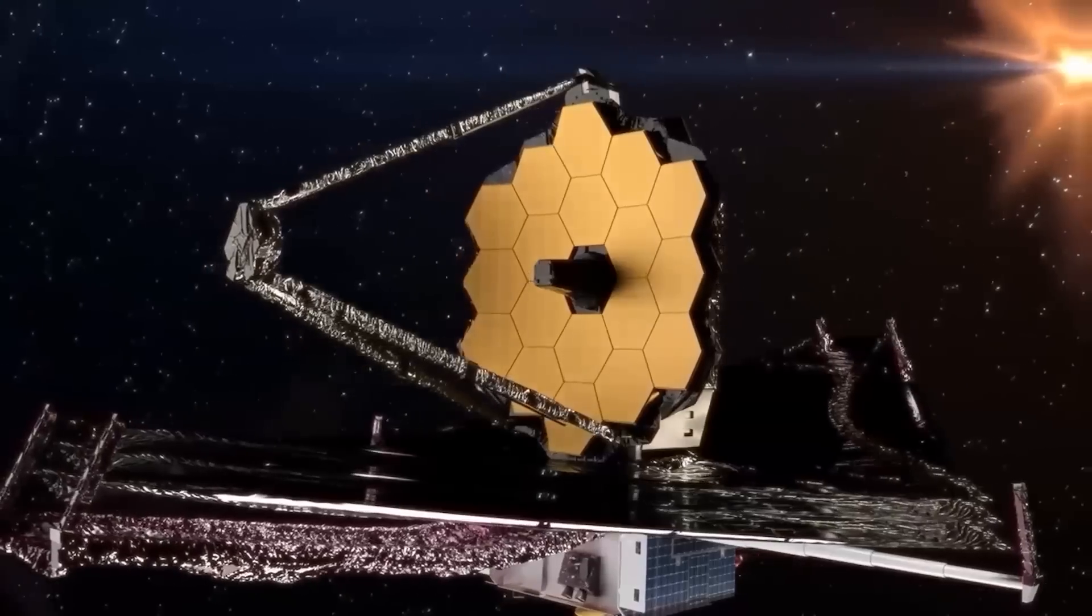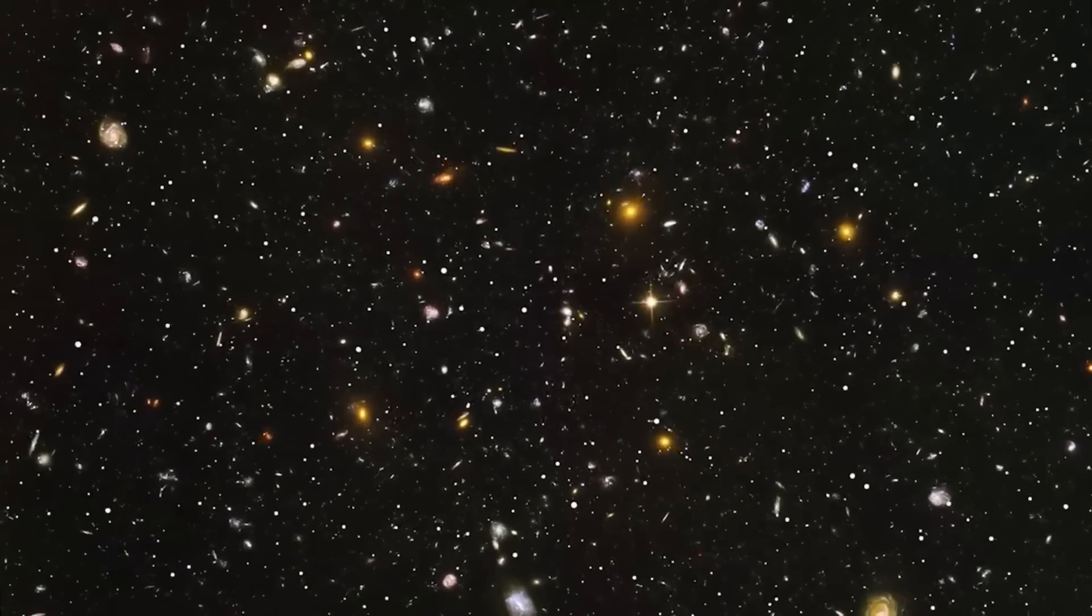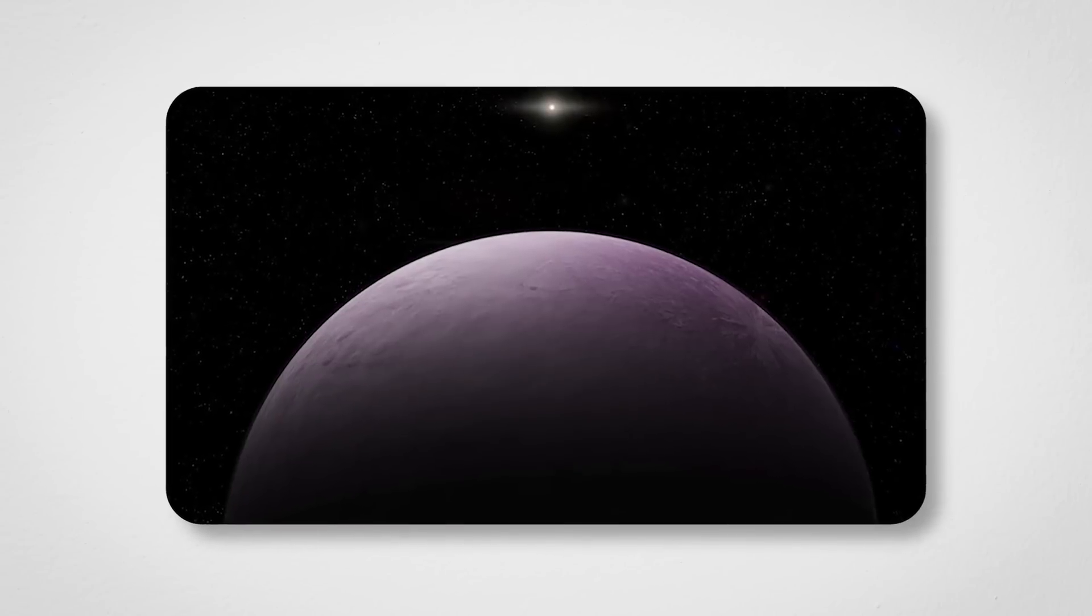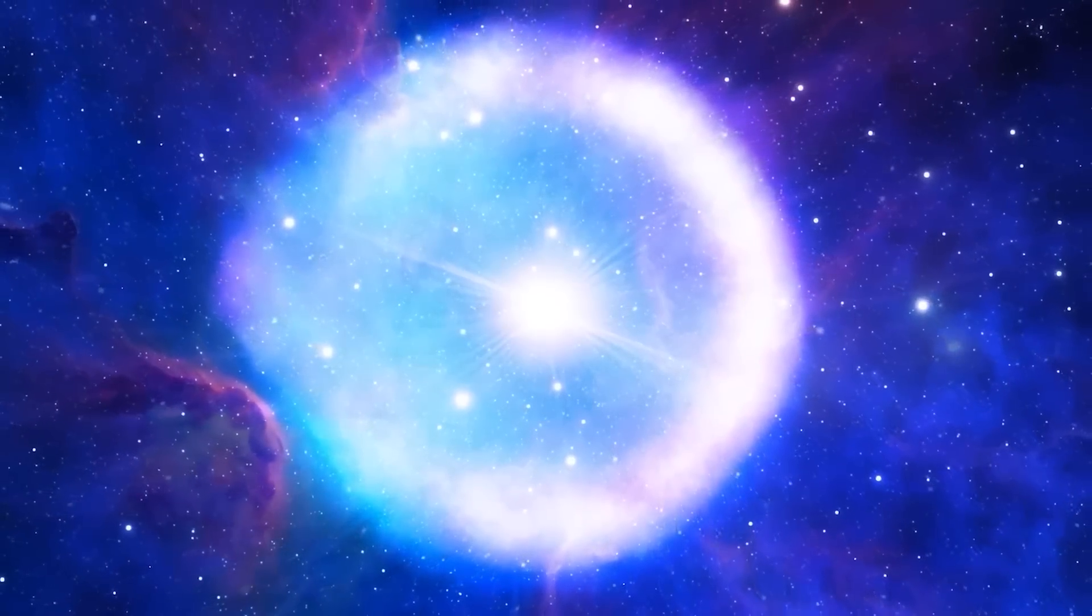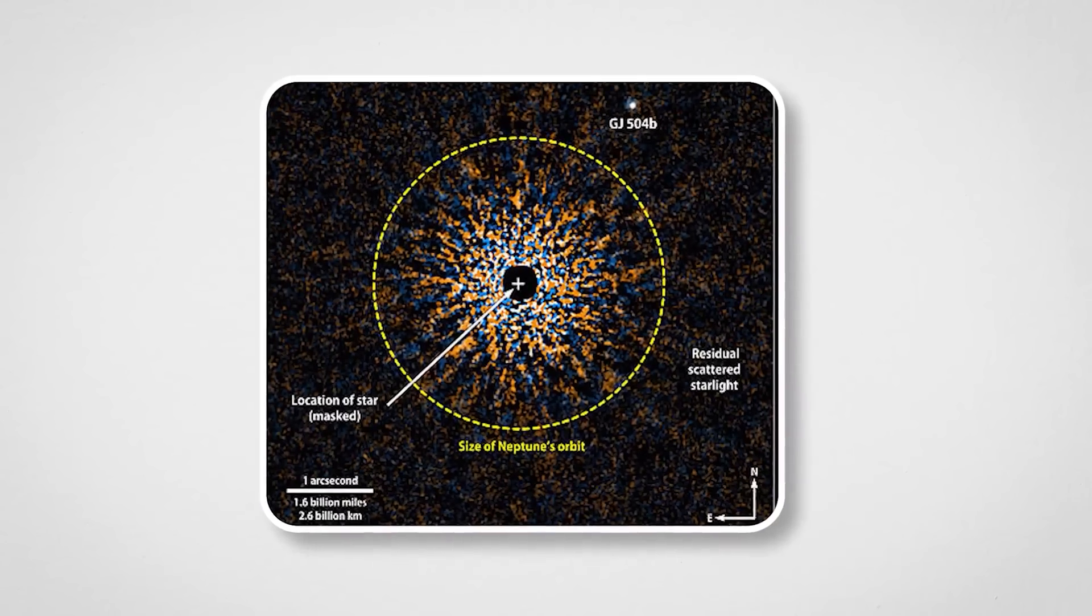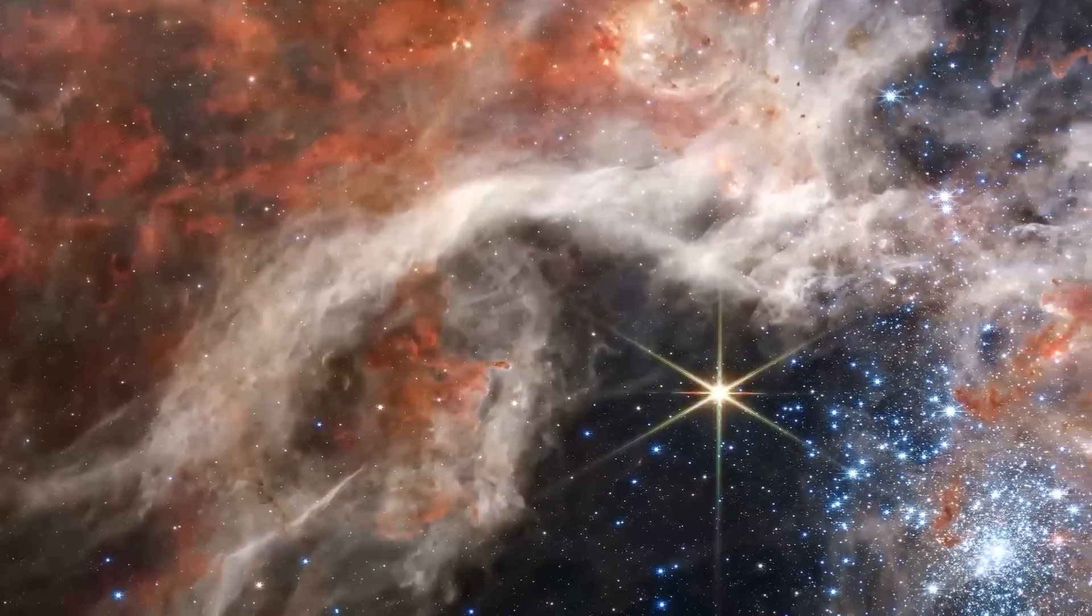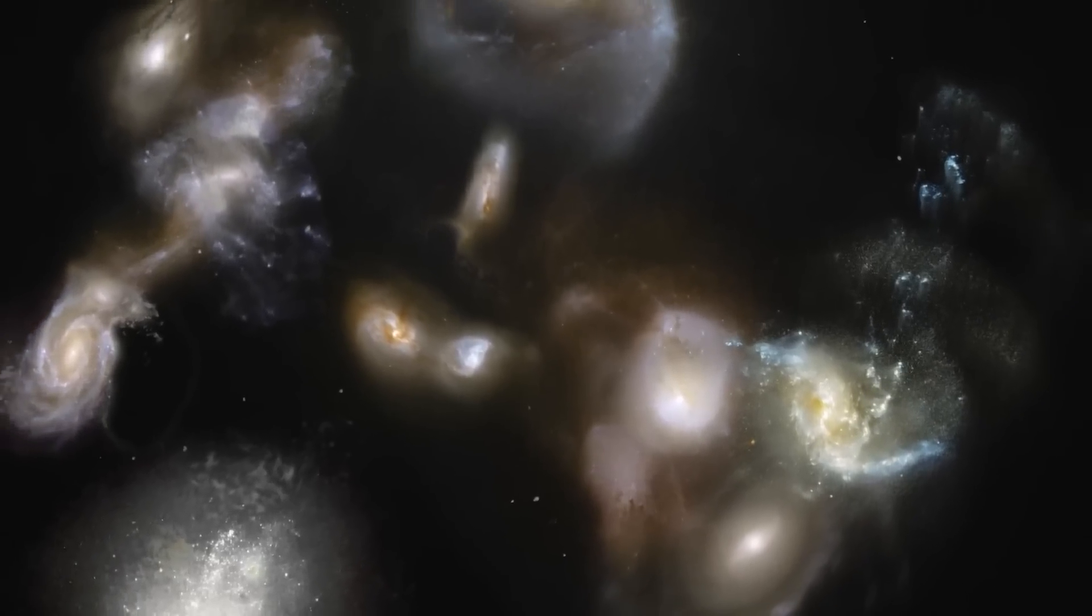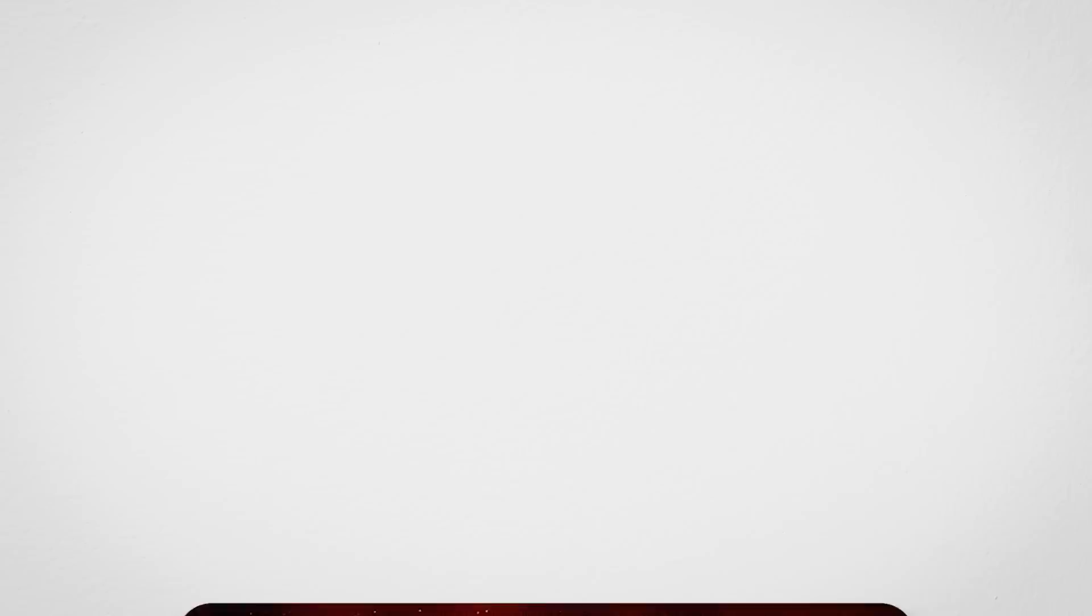Have you heard about what the James Webb Space Telescope just did? It's causing a stir with some wild discoveries, and this one's a doozy. A planet called Gliese 504b has been captured in what's being called the clearest image yet of its kind. This isn't just another pretty picture. It's a planet that's making scientists rethink what we know about the universe. Let's break it down in the simplest way possible.